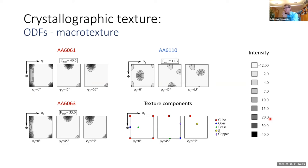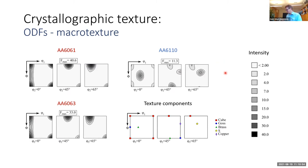This slide shows the orientation distribution functions giving the macro texture of these materials. The two recrystallized materials have very similar and very strong texture, with components being cube and Goss. The non-recrystallized fibrous material has a deformation texture with components cube, brass, copper, and S — orientations along the so-called beta fiber — which is somewhat weaker than what we see for the recrystallized materials.